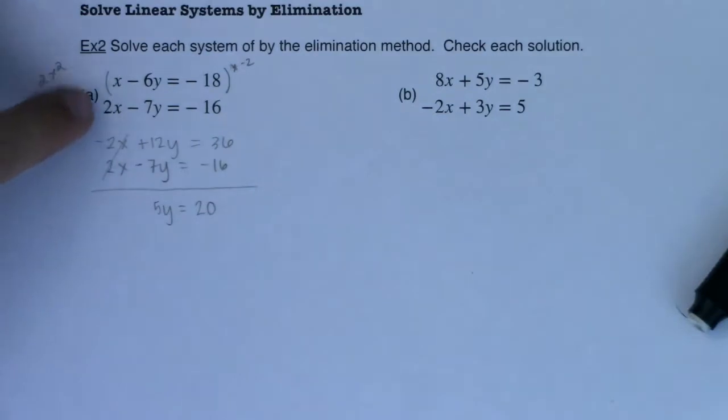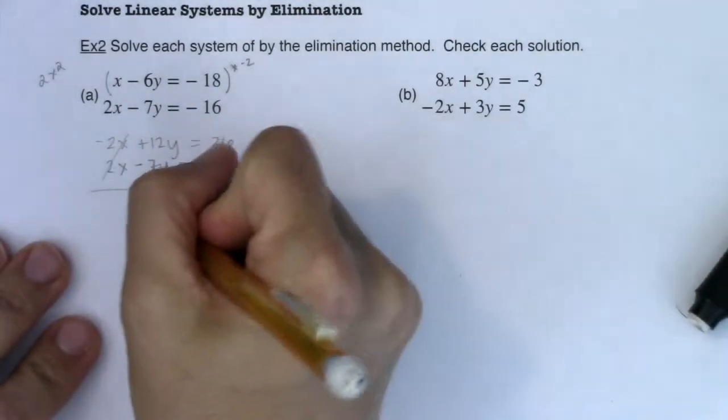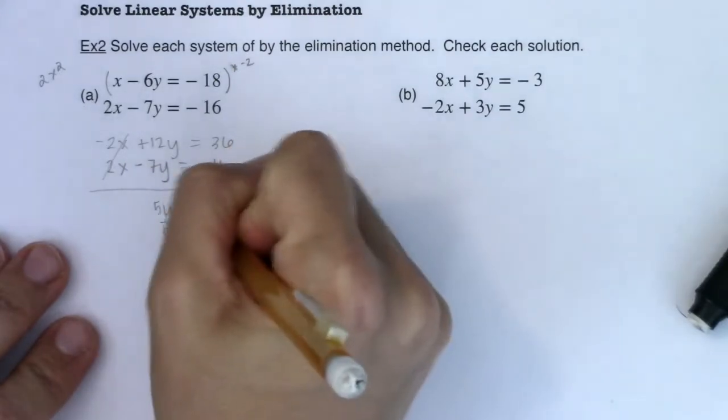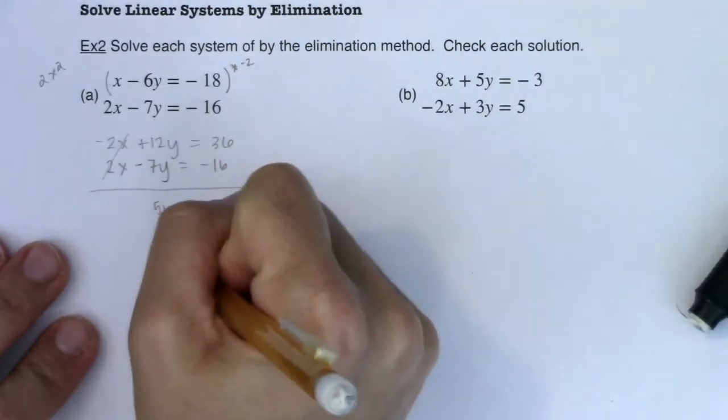And all of a sudden you can see I took my 2 by 2 and I simplified it to a 1 by 1. So this was two variables, two equations. Now I just have one variable, one equation. And it becomes a little bit nicer. I divide both sides by 5 and I get y is equal to 4.